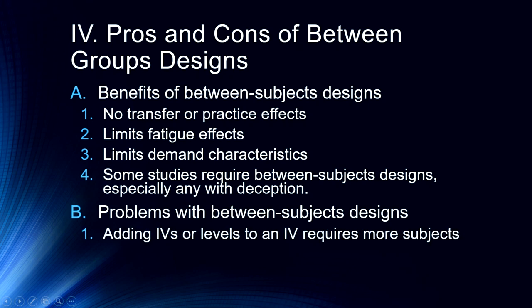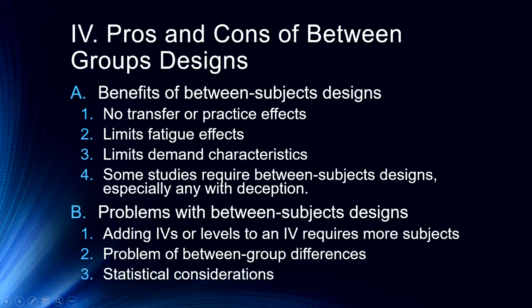So some problems with between-subjects designs are of course adding independent variables or levels to an independent variable is going to require more subjects. So you have to think very carefully anytime you're going to add a between-subject design, particularly if it's a high-cost experiment. So if you're doing let's say a PET scan, which is about $4,000 a participant, adding 10 more participants is $40,000. And even in a lower-cost experiment, so in one of my experiments we pay participants $100, adding a between-subjects variable doubled the cost of that experiment.